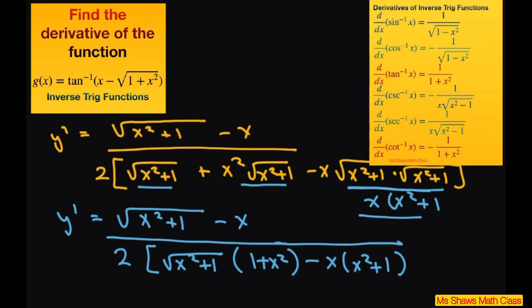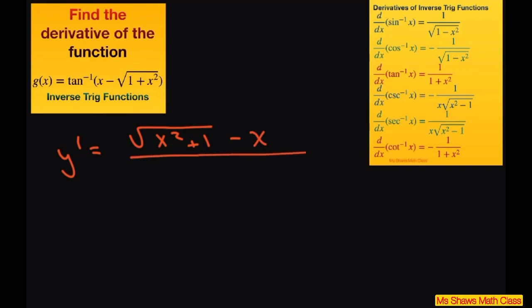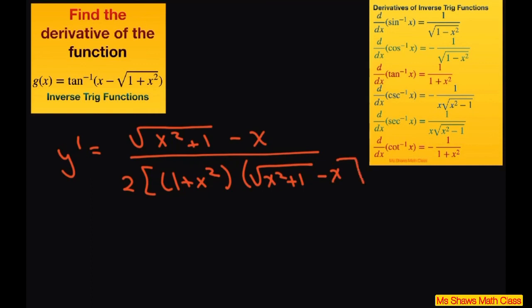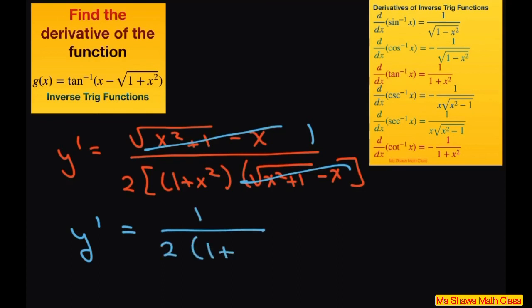After grouping, I can factor out 1 plus x squared from the denominator. That gives y prime equals square root of x squared plus 1 minus x, over 2 times 1 plus x squared times square root of x squared plus 1 minus x. The common factor square root of x squared plus 1 minus x cancels, leaving y prime equals 1 divided by 2 times 1 plus x squared. That is the final answer.